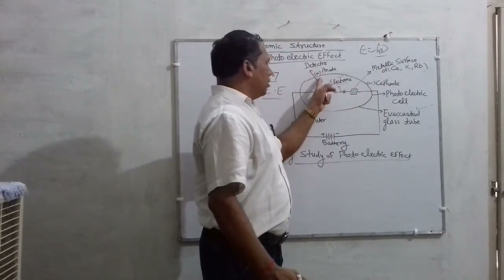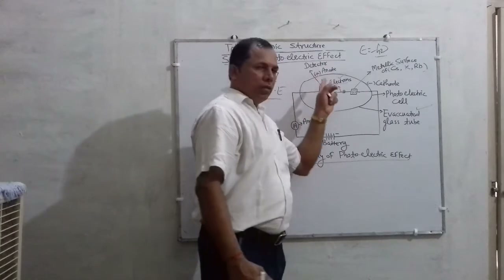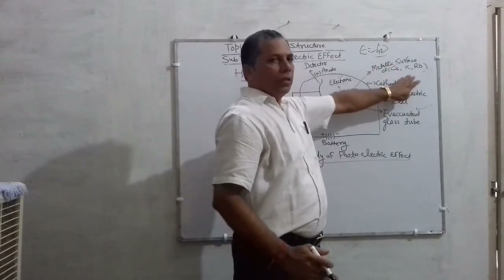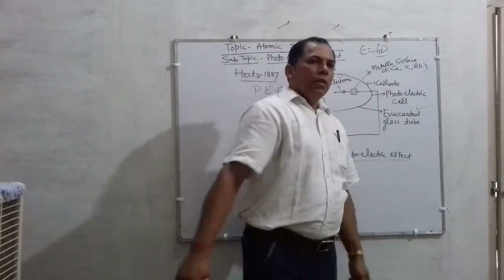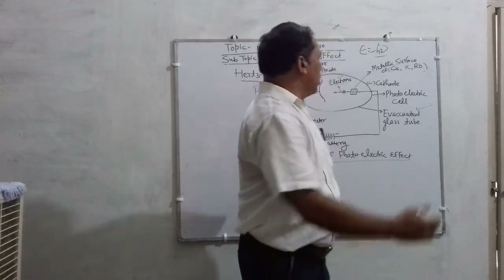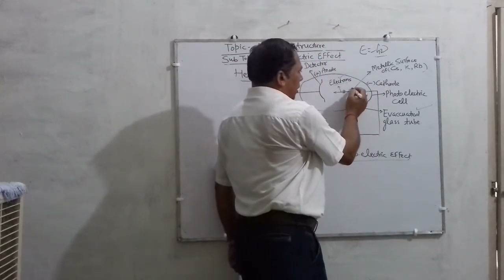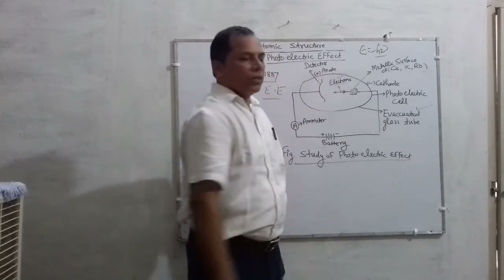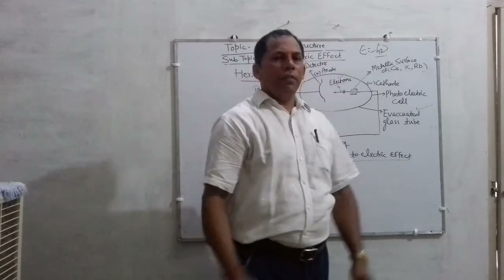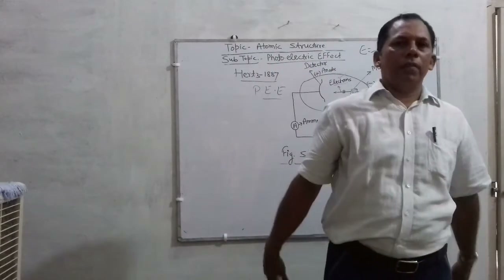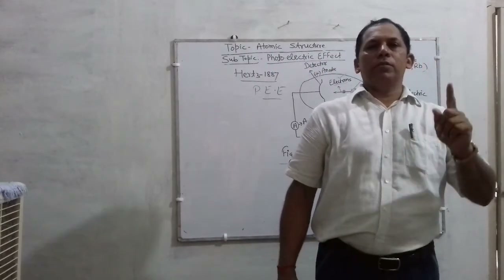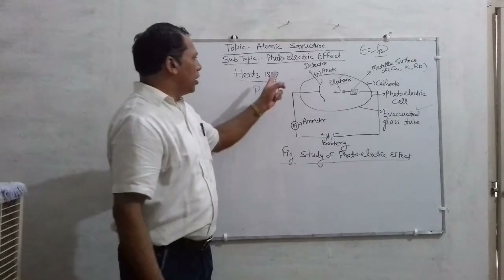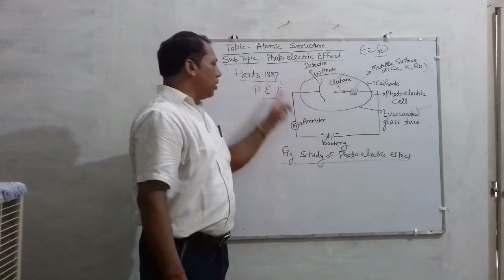There is one detector which is the anode. By exposing this surface to sunlight, there is an ejection of electrons from the metallic surface. Electrons are emitted or ejected and detected at the anode. This phenomenon of ejection of electrons from the metallic surface under the influence of photons is termed the photoelectric effect. This experiment was first of all carried out by Hertz in 1887.